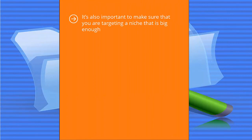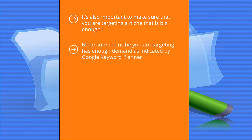It is also important to make sure you are targeting a niche that is big enough. There are lots of advertisers willing to pay a tremendous amount for structured settlement keyword traffic — more than $20 per click — but the volume of searches for that niche is actually quite low. Make sure the niche you are targeting has enough demand as indicated by Google Keyword Planner, which gives you both advertiser cost-per-click and estimated search volume. You are looking for a combination of decent commercial value with decent traffic volume.